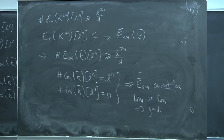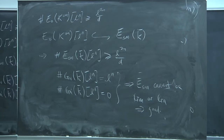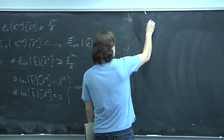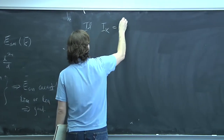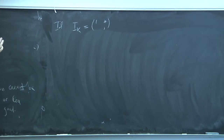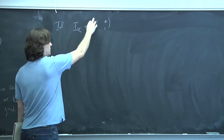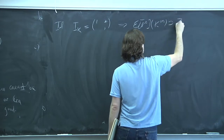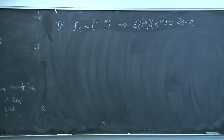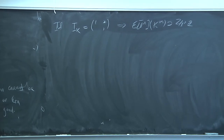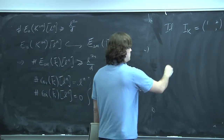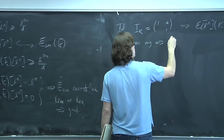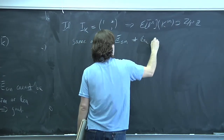For part 2: if the inertia acts unipotently, it has an invariant vector in the Tate module. That implies the ℓⁿ-torsion contains at least ℤ/ℓⁿℤ fixed by inertia. By the same argument as before, the smooth points of the reduction in the ℓⁿ-torsion grow too fast for 𝔾_a. So Ē_sm is not 𝔾_a, meaning we have semi-stable reduction.